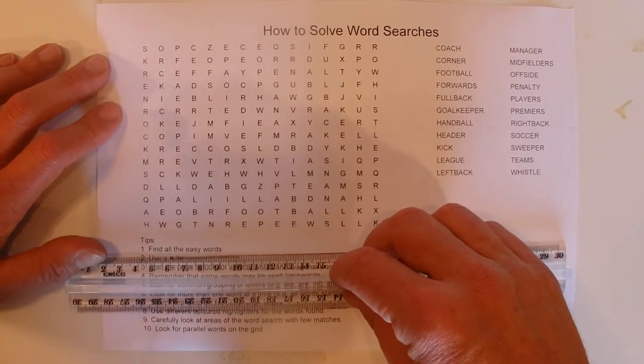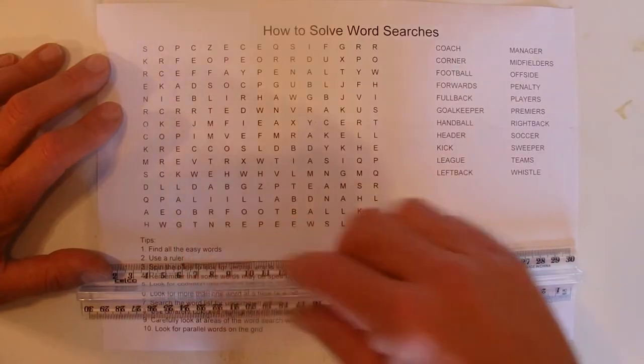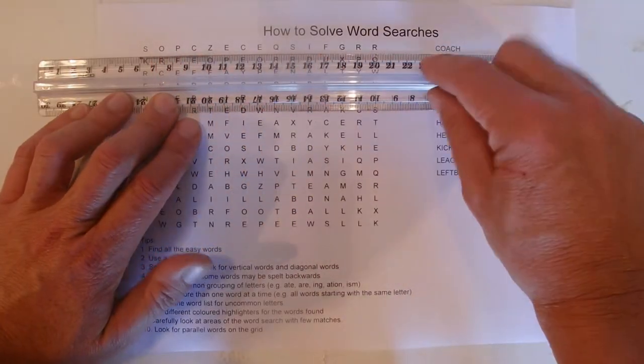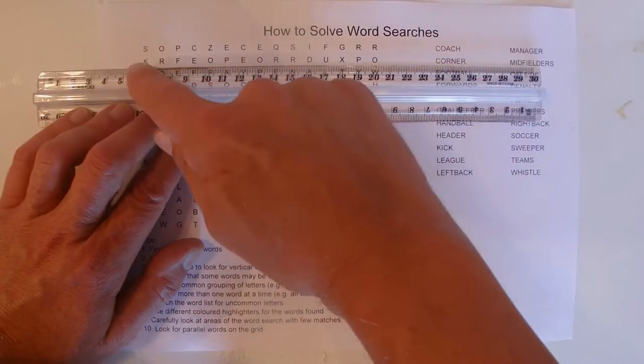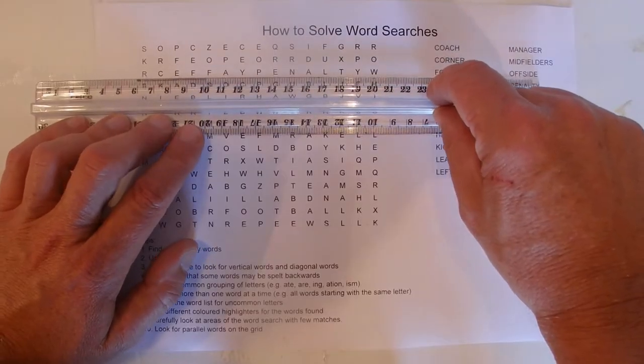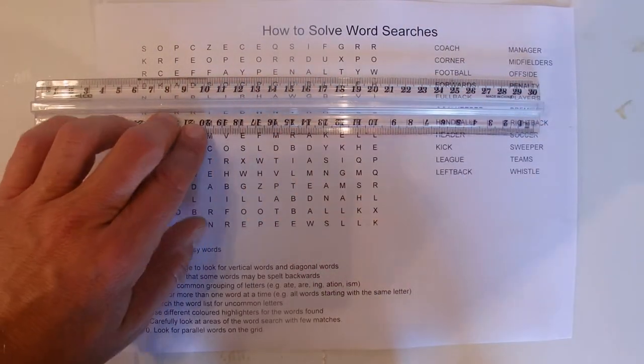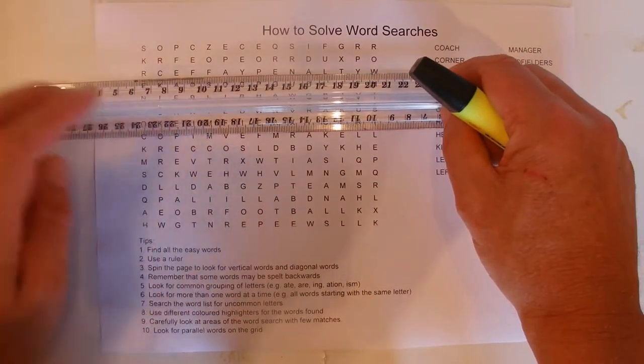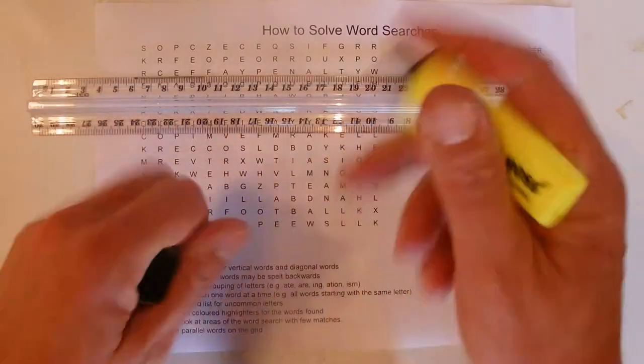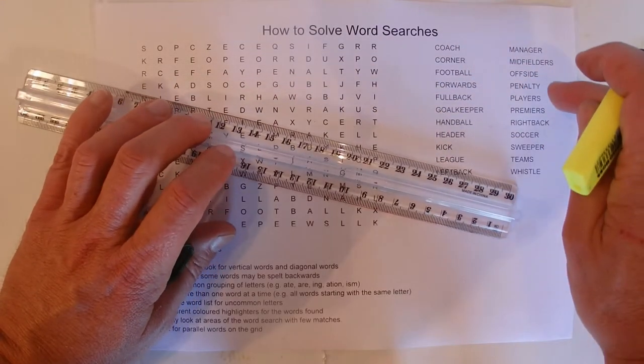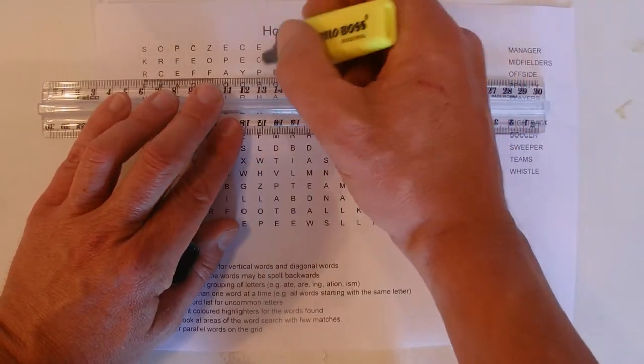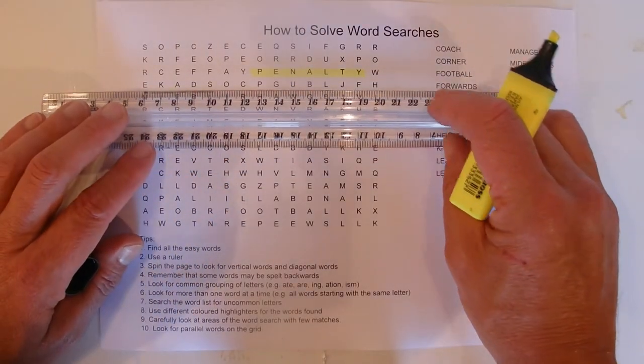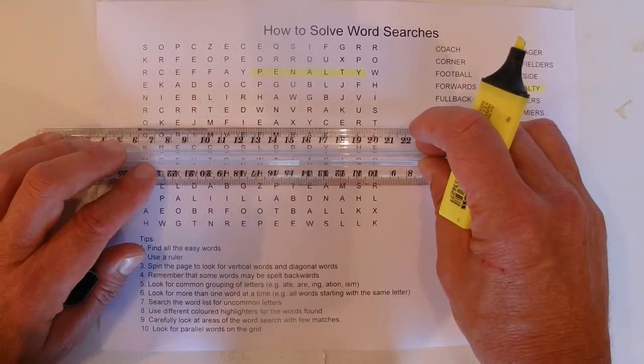The first tip is to find all the easy words. And the second tip is actually to use a ruler which is good for finding the easy words. What I like to do is just put it on each line. That sort of helps you concentrate on each line as you go down. And look for any words that might match. Don't worry at this stage about trying to find words from the list in your puzzle. I'll just go through and find all the easy words first. And penalty. And I know that penalty is there. So I'll get my highlighter. And I'll highlight penalty there. And penalty over the other side.